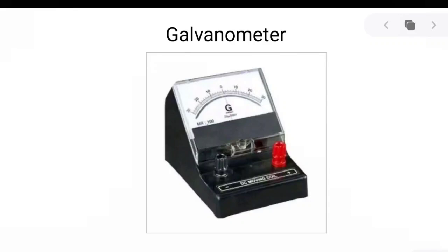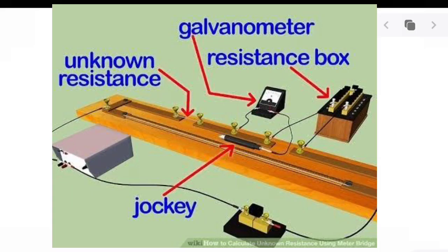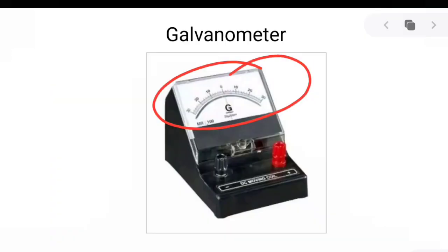Hi everyone, welcome to the new video. This will probably be the last theoretical video on the topic of moving charges and magnetism. In this picture, as you can see, this is a galvanometer. A galvanometer is the instrument that you have used while doing the experiment of meter bridge to detect the null deflection. In this galvanometer, as you can see, this pointer is at the middle point, which is zero.